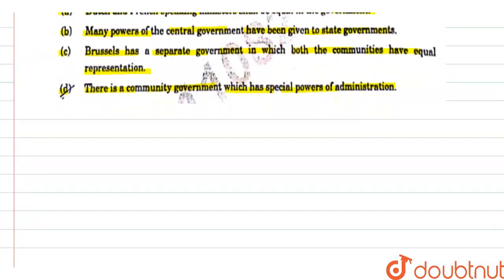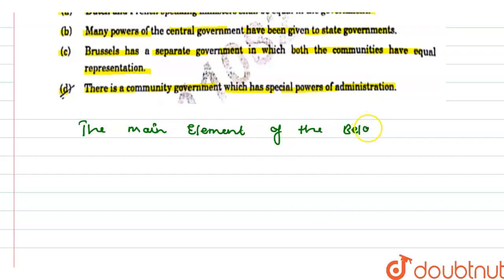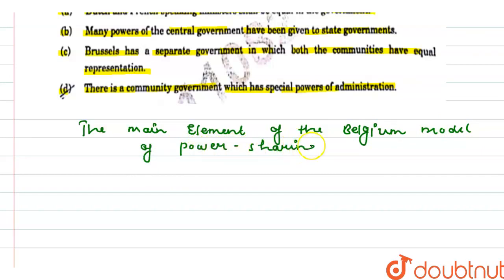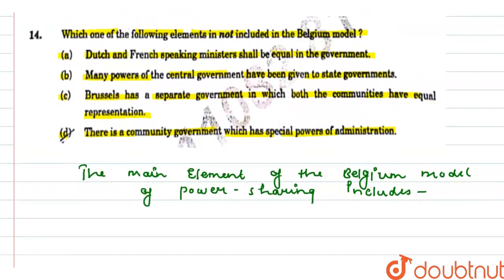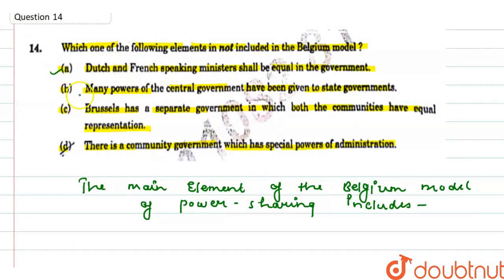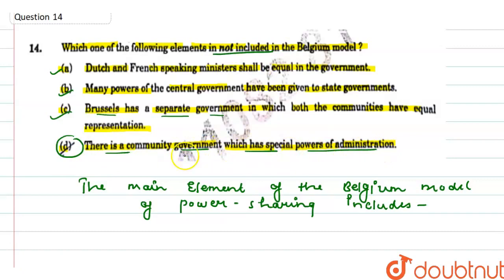So, guys, we find out the right option. The main element of the Belgium model of power sharing includes: Dutch and French speaking communities share powers of the central government, and Brussels has a separate government in which both have equal representation. But we have to tell you that the right answer is D — there is a community government which has special power of administration. So our right option is D. Thank you.